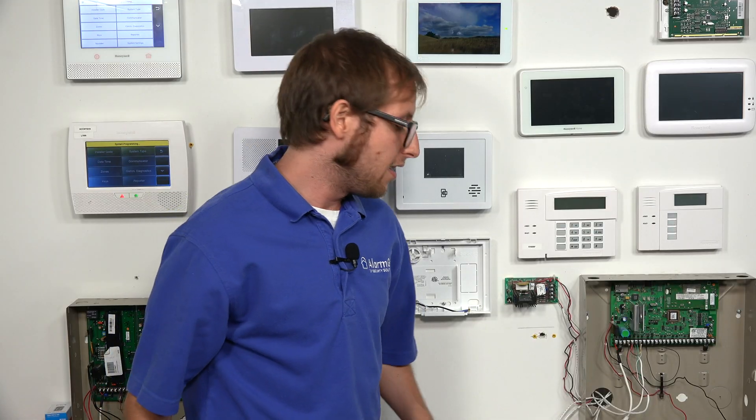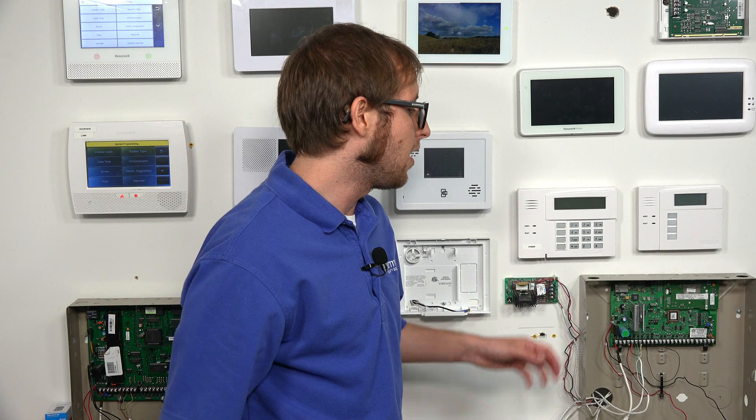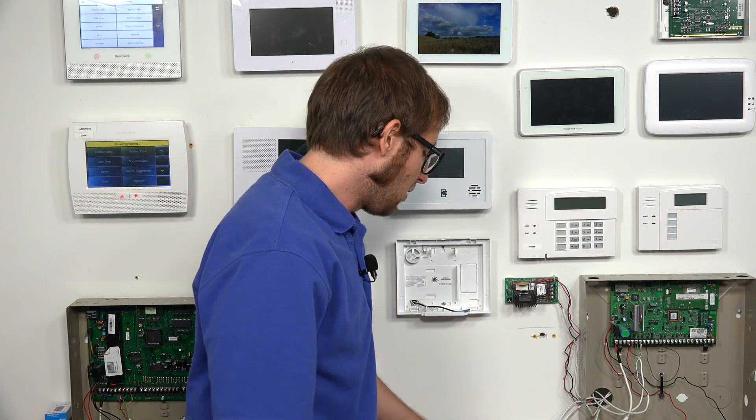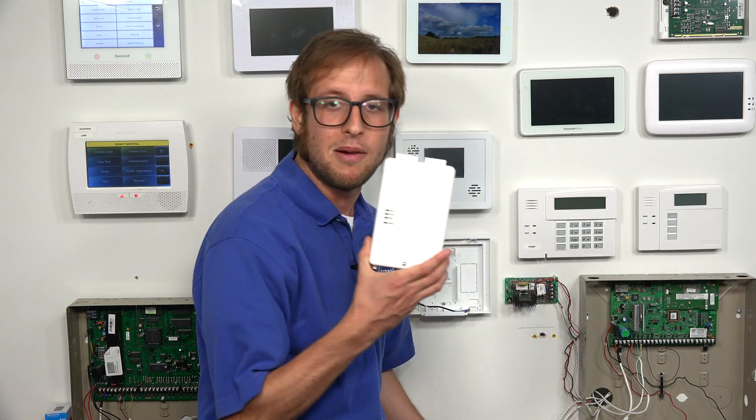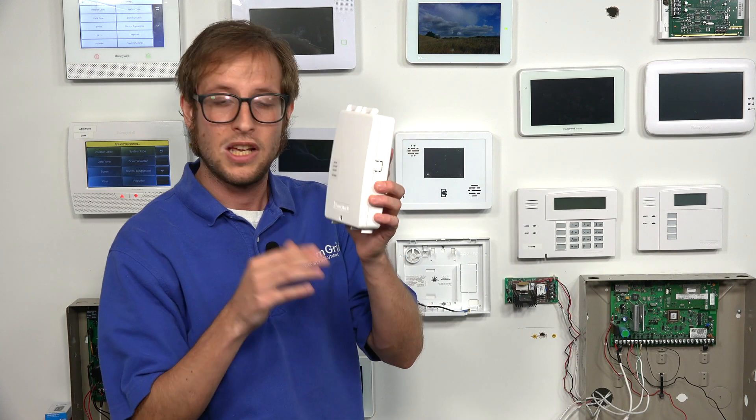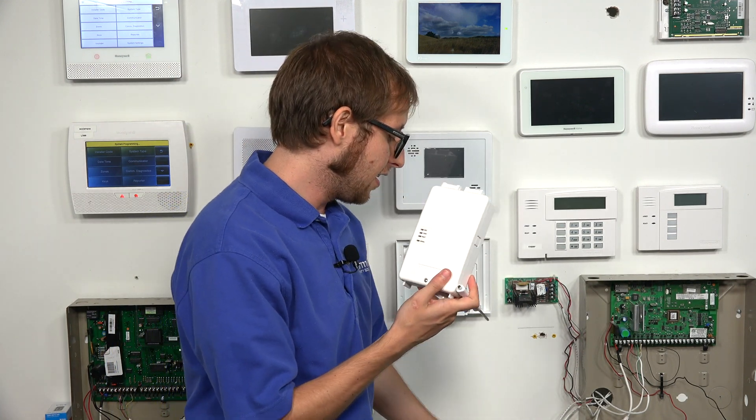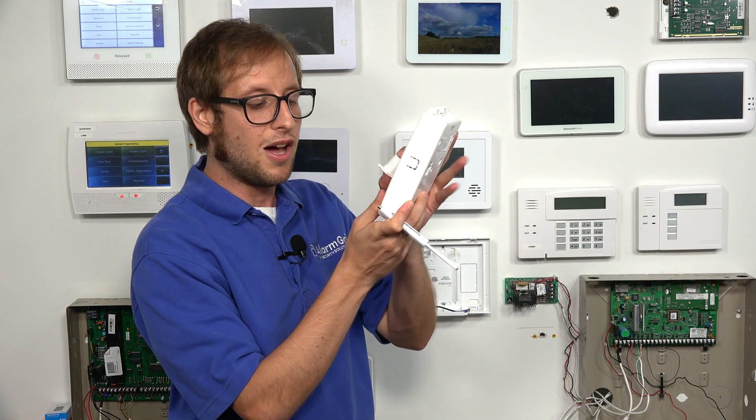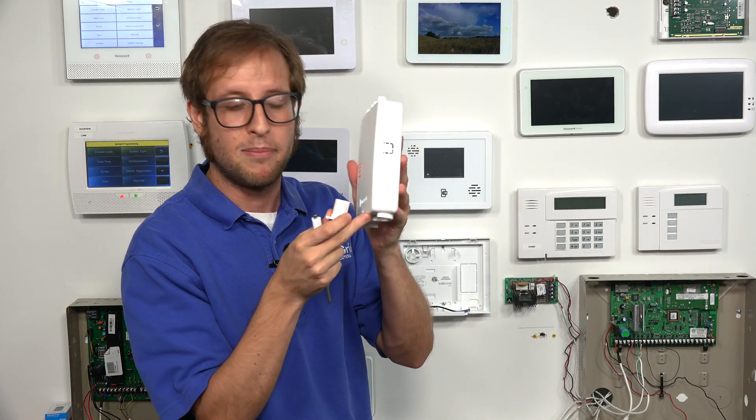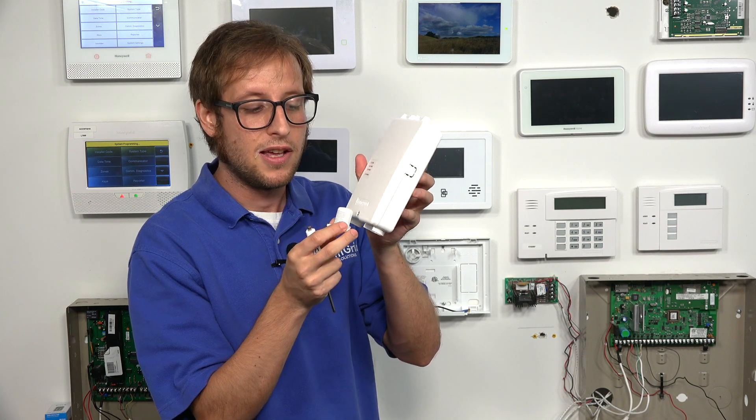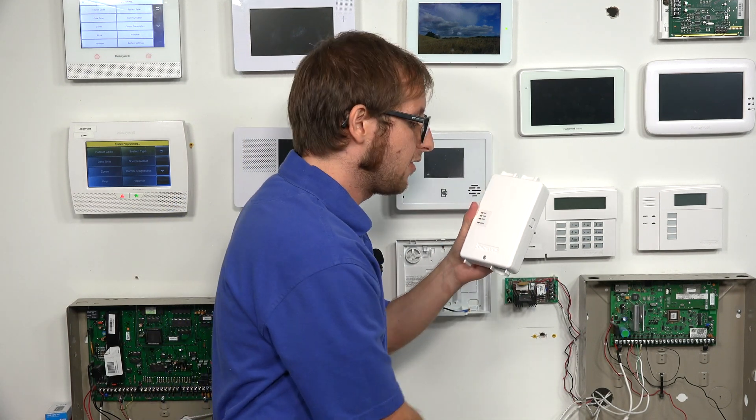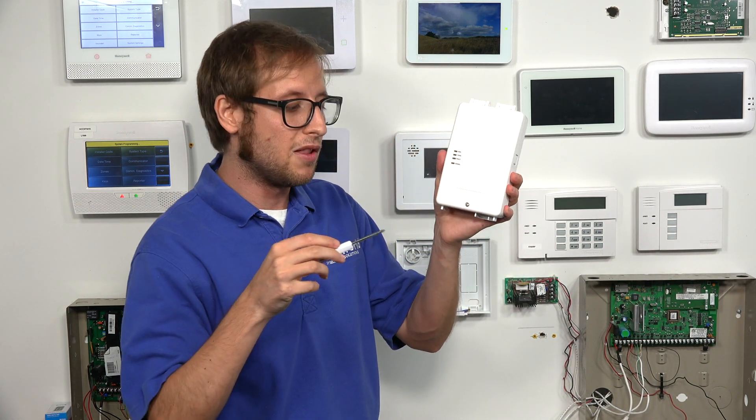So make sure you power down first. And now we're going to begin connecting the LTE-XA. Again, we're using the AT&T model. The Verizon model follows the same process to our VISTA-21IP. So we have the module right here. We have it completely not set up at all. We're going to start from scratch. So we do have to connect this piece to the bottom of it so it can fit into the panel's metal enclosure. And the first thing we need to do is open up the module.